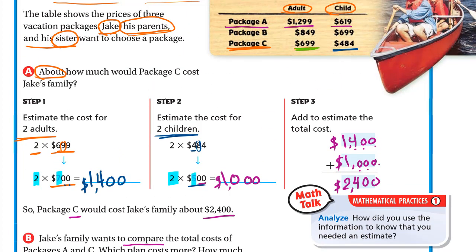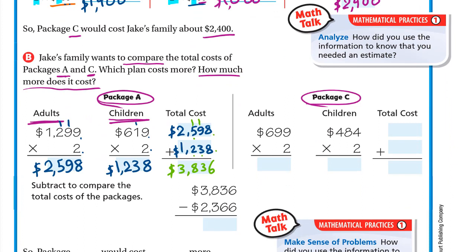For package C: $699 for the adult multiplied by 2, and $484 for the child multiplied by 2. Multiplying 699 by 2: 2 times 9 is 18, write 8 carry 1. 2 times 9 is 18 plus 1 is 19, write 9 carry 1. 2 times 6 is 12 plus 1 is 13. So 699 times 2 equals $1398. For the children: 484 times 2: 2 times 4 is 8. 2 times 8 is 16, write 6 carry 1. 2 times 4 is 8 plus 1 is 9. So 484 times 2 equals $968.